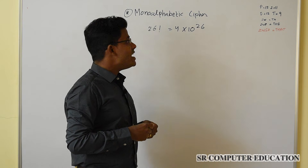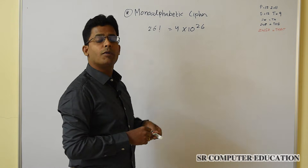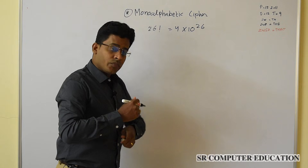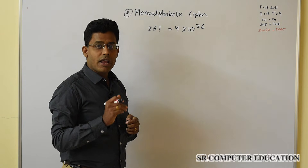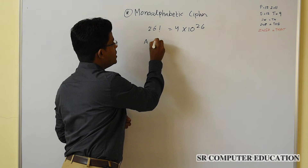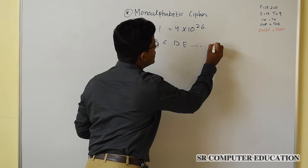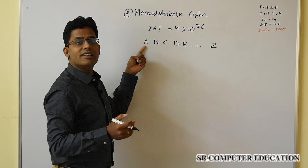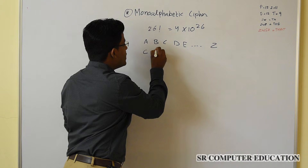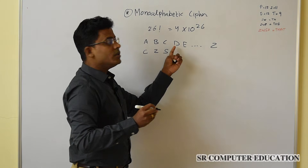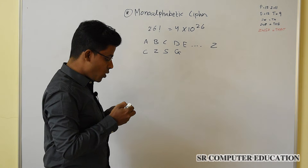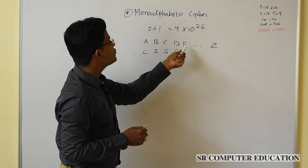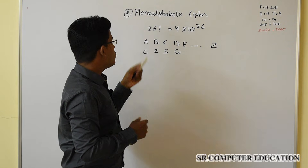Now let's see how encryption is performed in mono-alphabetic cipher. Encryption is very easy. You have to draw a table with A, B, C, D, E up to Z. In mono-alphabetic cipher, you can substitute any other letter for each alphabet. For example, substitute A with C, B with Z, C with S, D with G. One important rule: no letter should be repeated. If you substitute C for A, you cannot substitute C for E also.